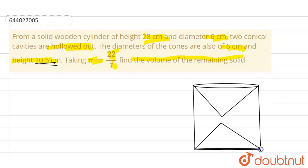Now if we talk about the radius - for the cone or for the cylinder, the radius will be half of the diameter, that is 3 cm. The height of the cone will be 10.5 cm in both cases, and for the cylinder it will be 28 cm.